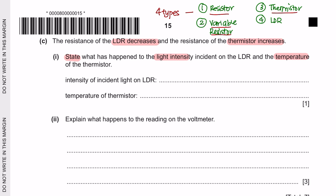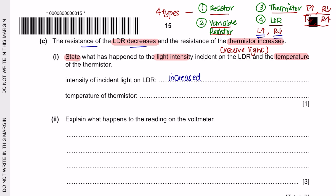A thermistor is technically a variable resistor but it changes according to heat. When the temperature increases, its resistance decreases. When its temperature decreases, its resistance increases. A light-dependent resistor is also a variable resistor but it changes according to light. When light intensity increases, the resistance decreases and vice versa. Remember that a light-dependent resistor receives light and does not emit light. So if the resistance of the LDR has decreased, this means that the light intensity has increased. And if the resistance of the thermistor has increased, this means that the temperature has decreased.